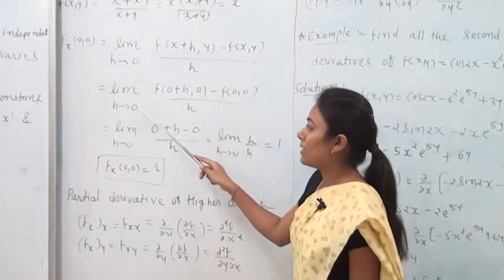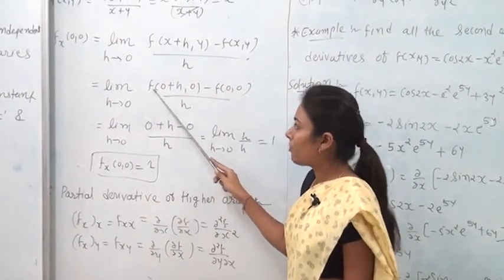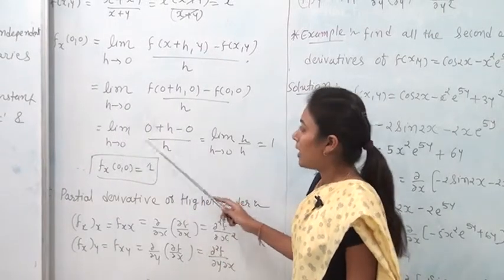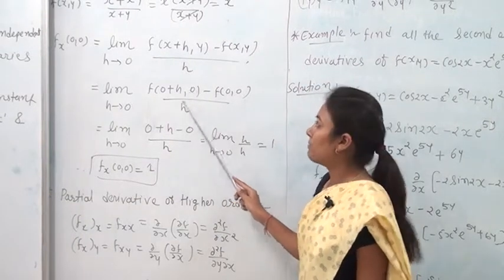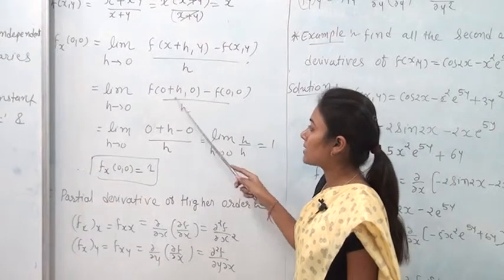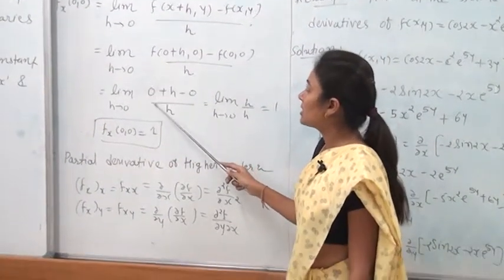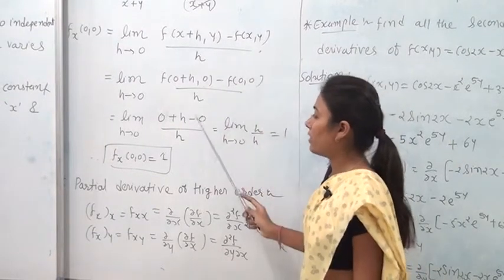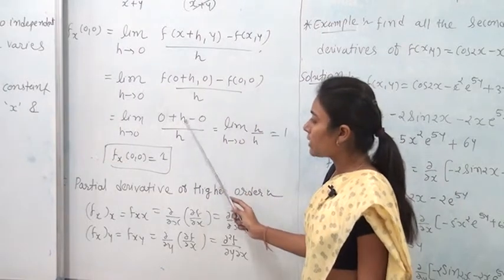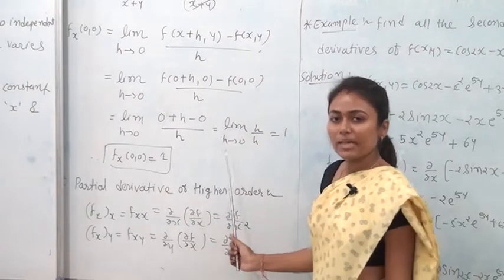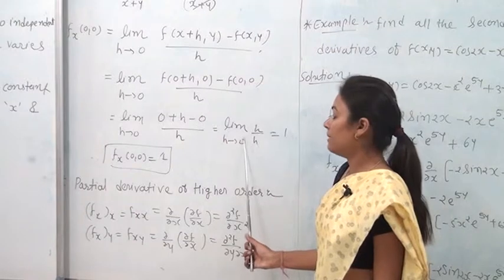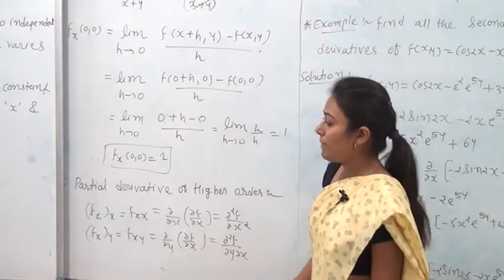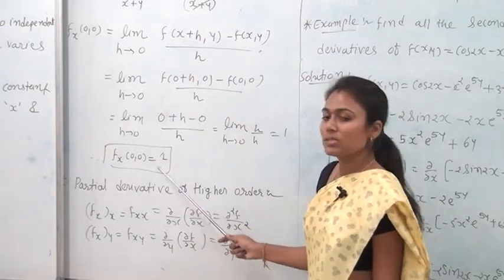Since f(x, y) = x, putting x = 0, y = 0: f_x(0, 0) = limit as h → 0 of [f(h, 0) − f(0, 0)] / h = limit as h → 0 of h/h = 1. The limit of a constant is that constant, so f_x(0, 0) = 1. Hence proved.